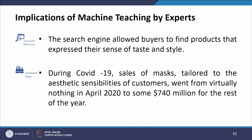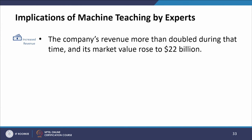The implications of machine teaching by experts at Etsy: first, increased relevance — search engines allowed buyers to find products that express their sense of taste and style. Second, increased sales — during COVID-19, sales of masks tailored to customers' aesthetic sensibilities went from virtually nothing in April 2020 to approximately $740 million for the rest of the year. Third, the company's revenues more than doubled and its market value rose to $22 billion.